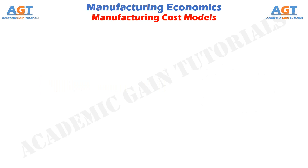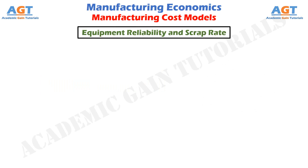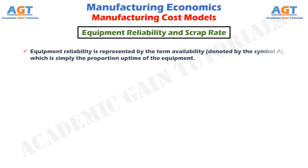Equipment reliability and scrap rate of parts are sometimes issues in production. Equipment reliability is represented by the term availability, denoted by the symbol A, which is simply the proportion of time the equipment is running. For example, if availability A equals 97%, then for every 100 hours of machine operation, we would expect the machine to be running for 97 hours and down for maintenance and repairs for 3 hours.